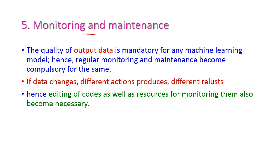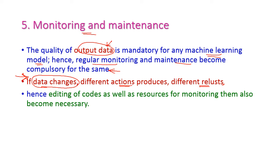Monitoring and maintenance is another issue. The quality of output is highly important in any machine learning model, so regular monitoring and maintenance is necessary. The machine learning model depends on data, and data may change very rapidly because day by day the volume of data gets increased. Hence, different actions may produce different results. The editing of code as well as resources for monitoring are also required.